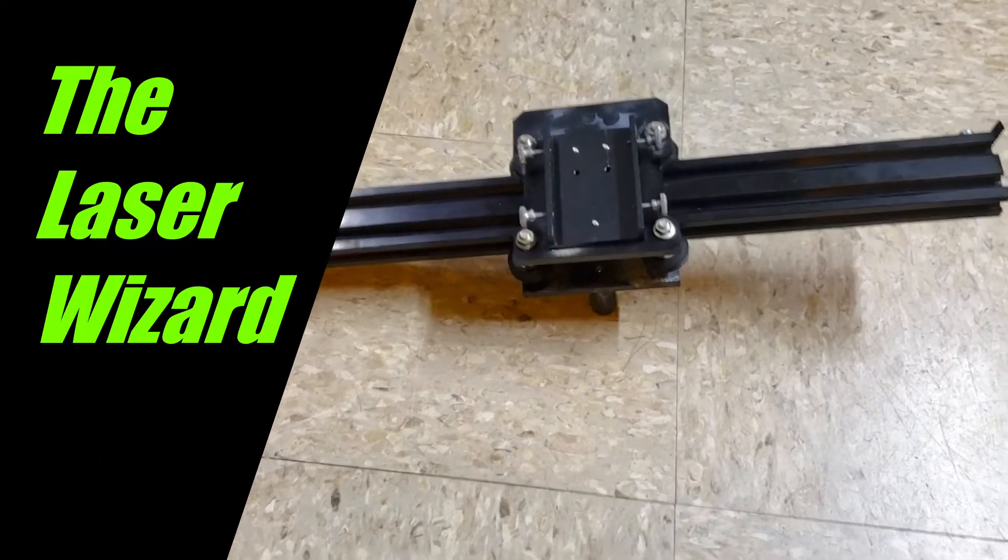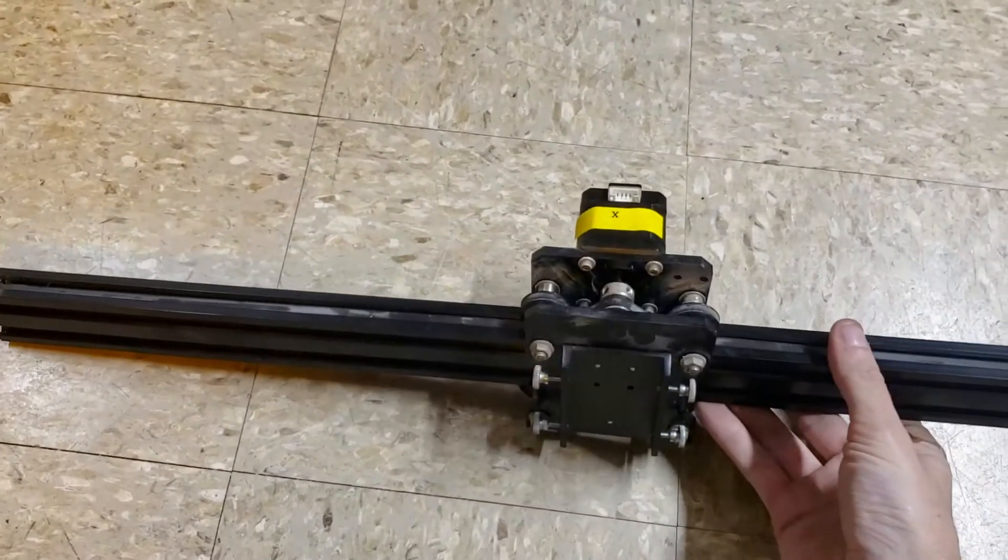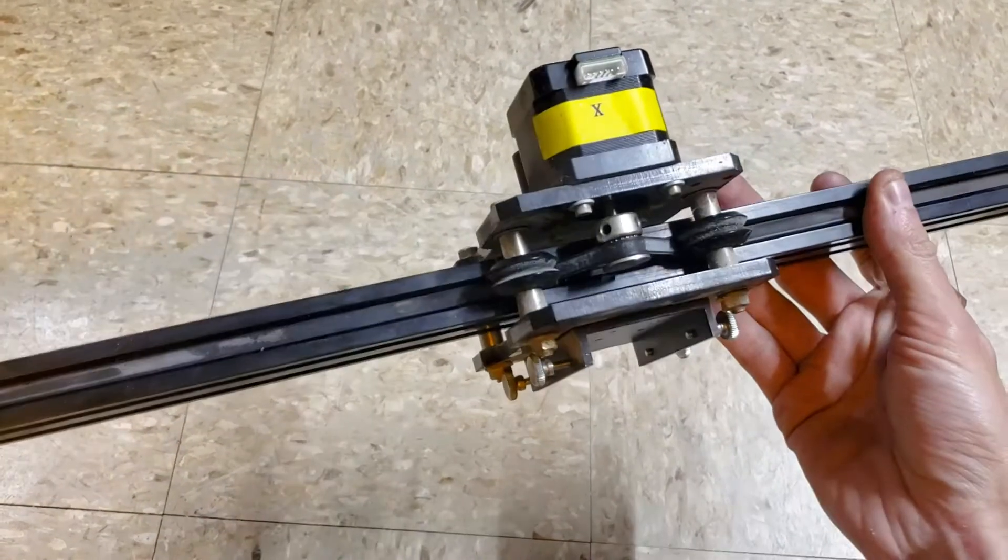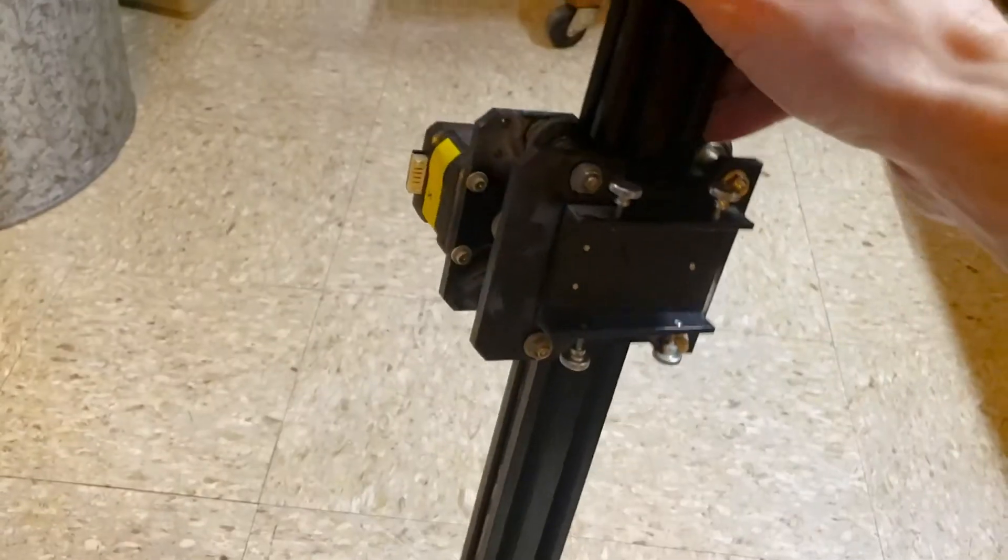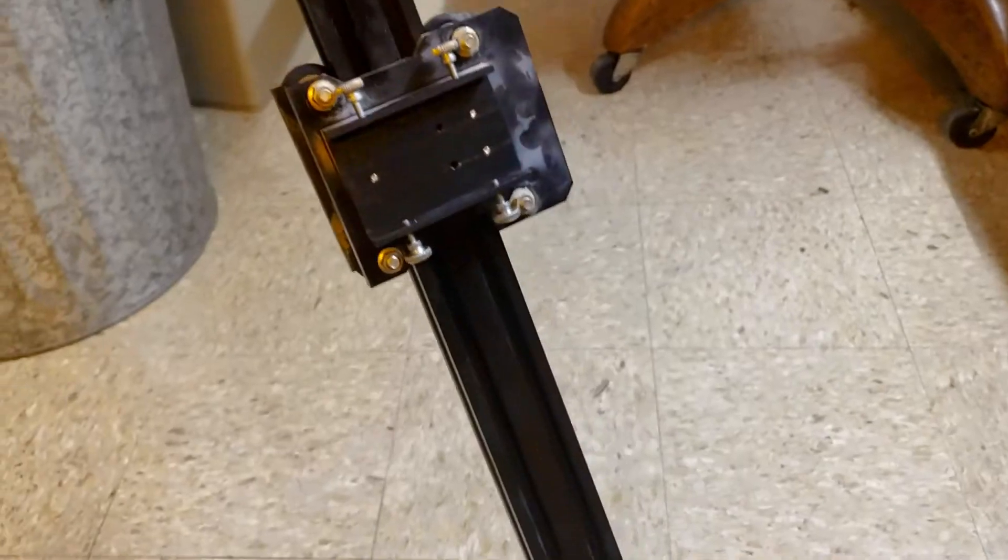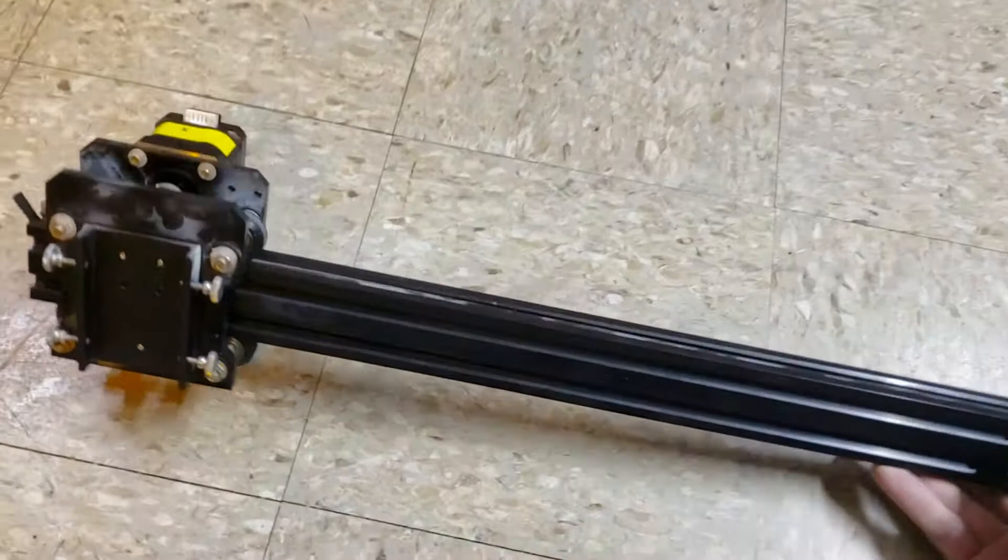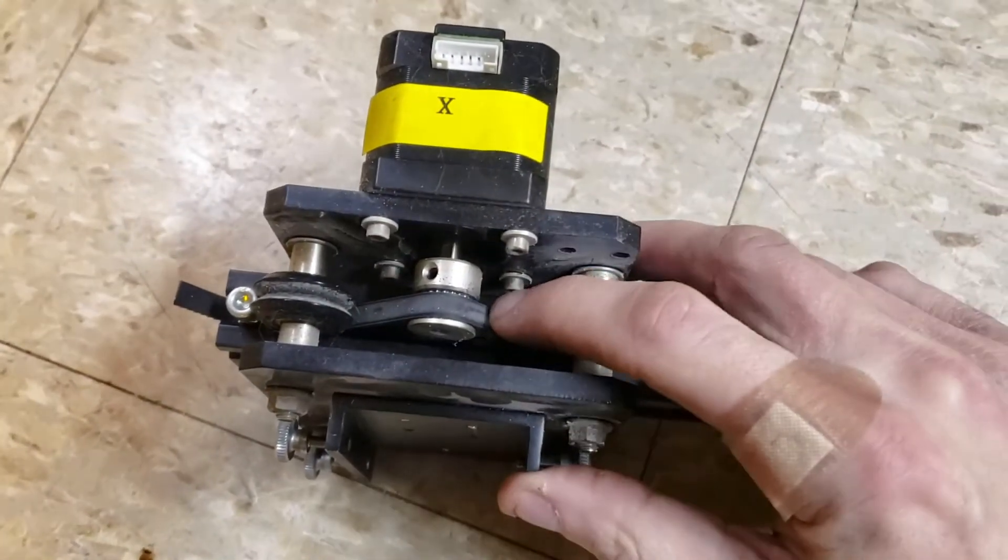All right, check it out everybody. We've got very important things to go over here, and that is proper tension of your timing belt and of your V-wheels. It's got to be able to slide by gravity alone, very smoothly. It shouldn't just drop and clank, but it should glide.